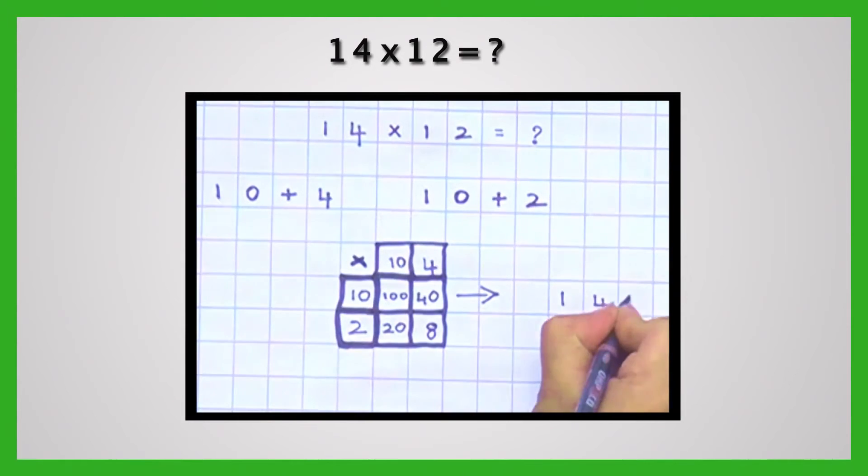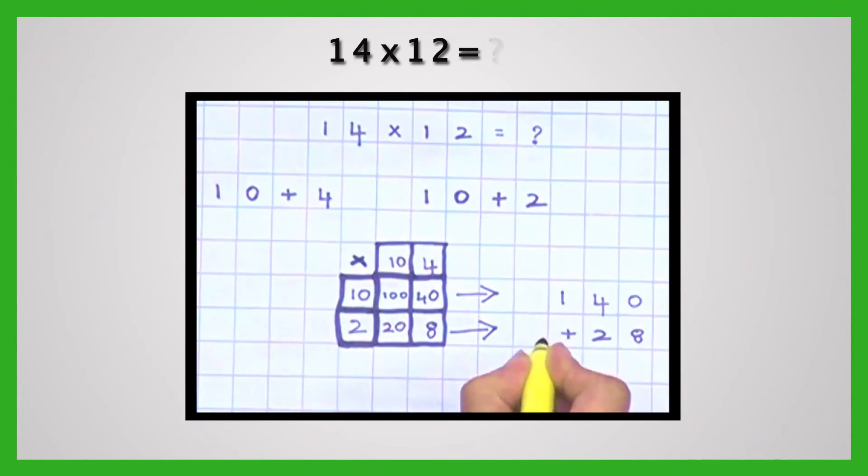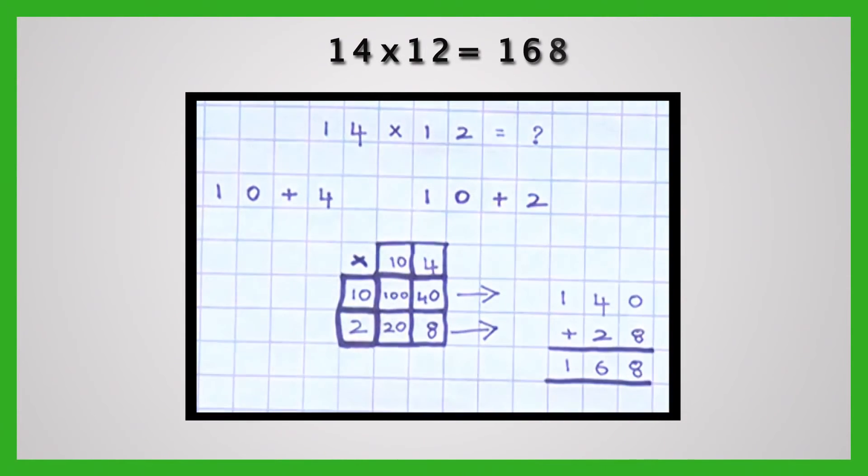Add products horizontally first. We get 140 and 28. Now add these vertically. We get 168, which is the final product.